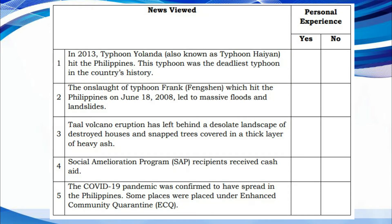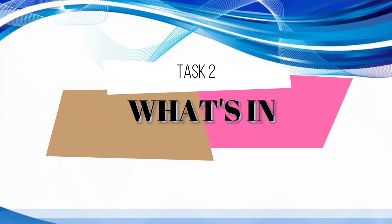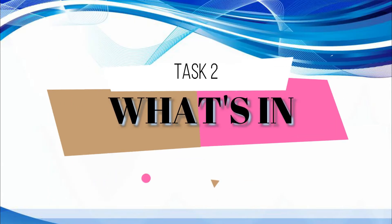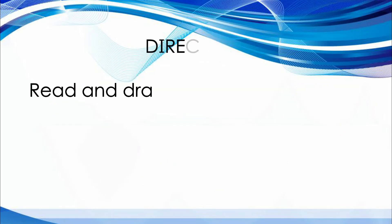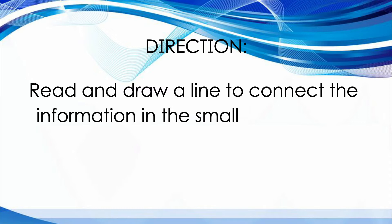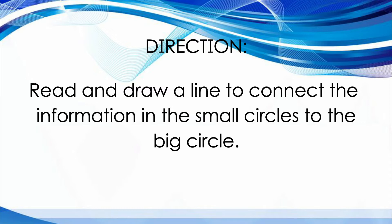How was your checklist? Now we will proceed to Task 2: What's In. Direction: Read and draw a line to connect the information in the small circles to the big circle.